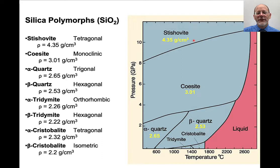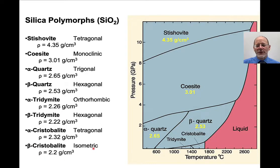These all have different densities. At ultra-high pressures, the density of SiO2 is much, much higher than the densities at intermediate or very low pressures.